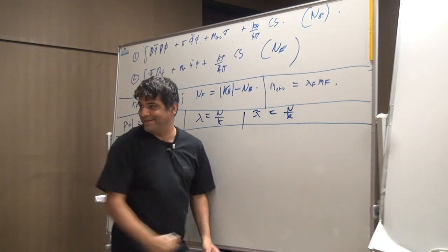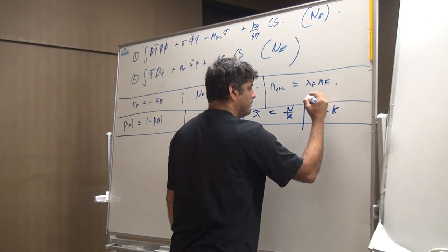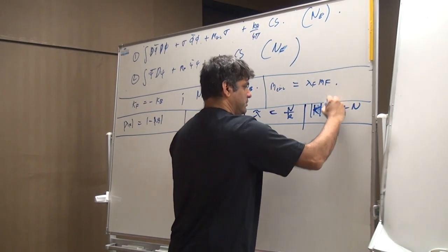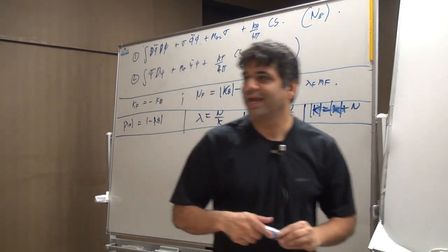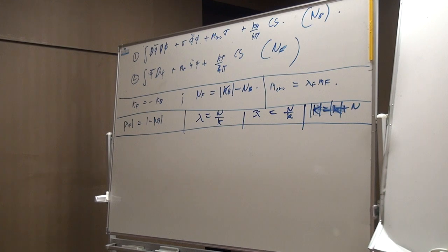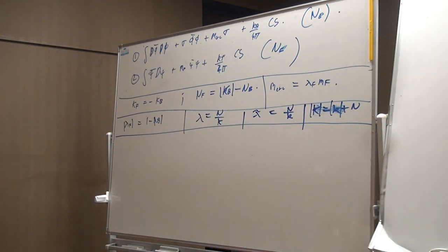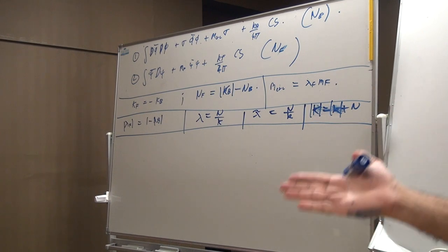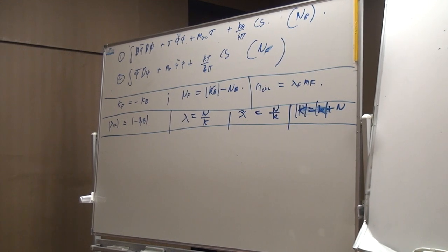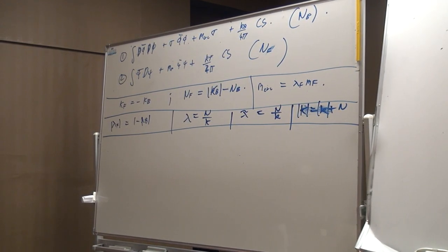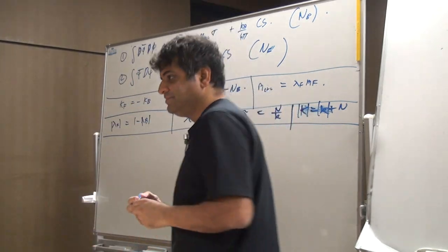Some of you may think it unusual to have a strong-weak coupling duality relating 0 to 1 rather than 0 to infinity — but that's just a variable redefinition. If you define λ̃ = N/k, and recall that κ = k + N, so |κ| = |k| + N, then λ = 1 in our notation turns into λ̃ = ∞. Lambda equals 1 is extreme strong coupling; λ = 0 is extreme weak coupling. These two theories are claimed dual under λ → 1 − λ, which working with λ̃ is actually λ̃ → 1/λ̃.